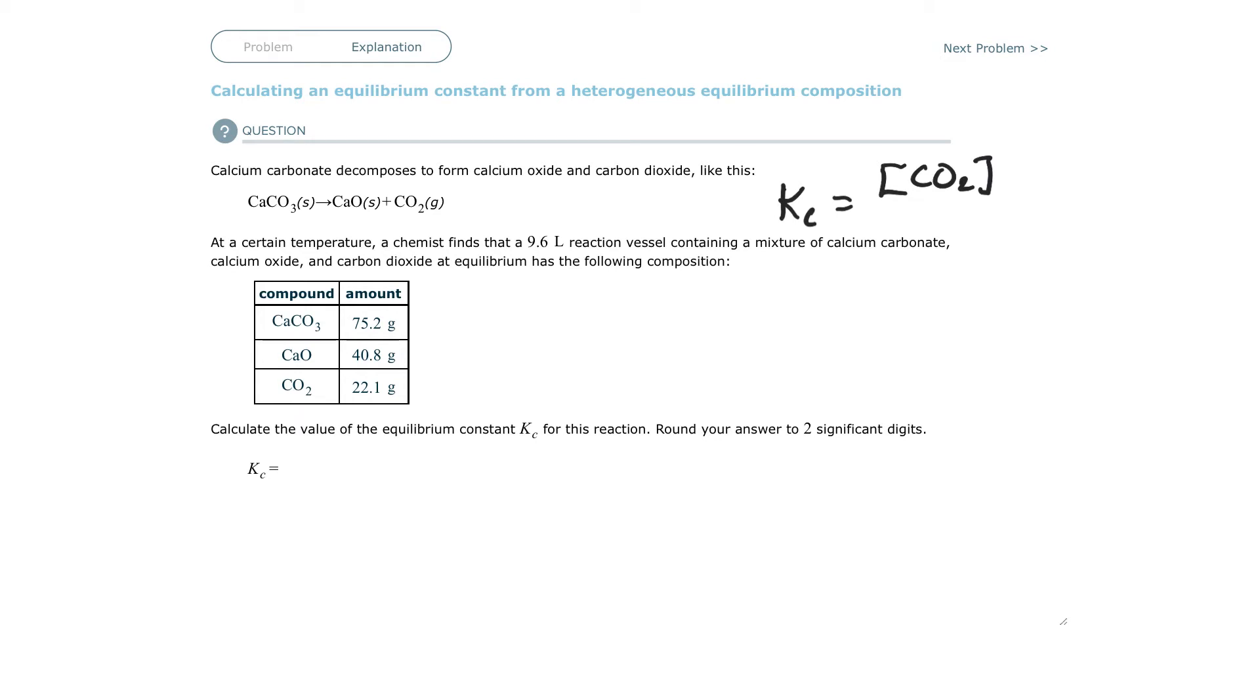So anytime you have a heterogeneous composition, you're simply going to ignore all the solids and liquids, and then write your expression only using the gases. And in this case, that's all I've got. I want the concentration of carbon dioxide gas, and my constant is based upon that concentration.